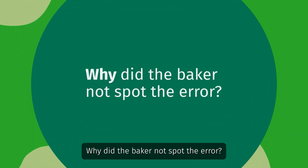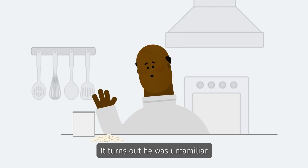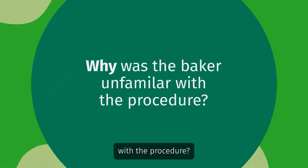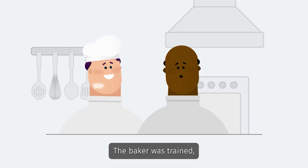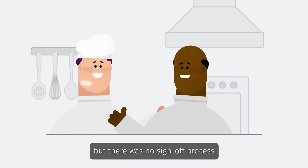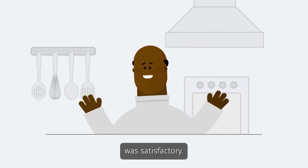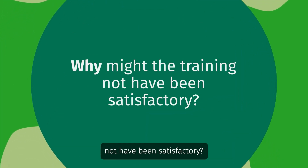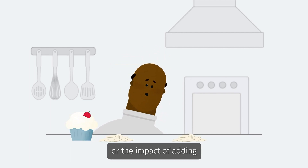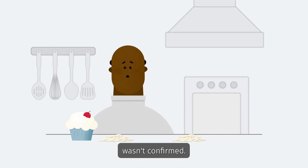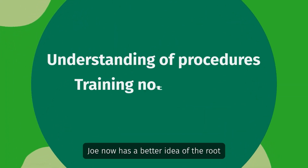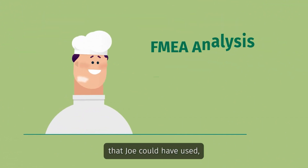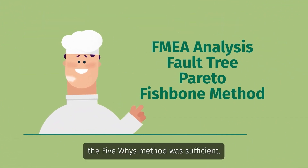Why did the baker not spot the error? It turns out he was unfamiliar with the complete production procedure. Why was the baker unfamiliar with the procedure? The baker was trained but there was no sign-off process to determine whether the training was satisfactory. Why might the training not have been satisfactory? The baker's understanding of the process or the impact of adding the wrong ingredient wasn't confirmed. From this line of questioning, Joe now has a better idea of the root causes. There are other methods he could have used, but for now the five whys method was sufficient.